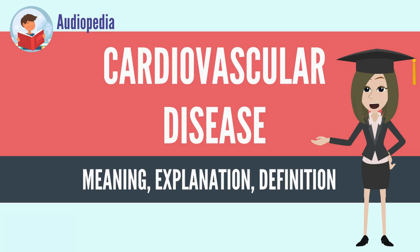85% of people over 80 have CVD. The average age of death from coronary artery disease in the developed world is around 80, while it is around 68 in the developing world. Disease onset is typically 7 to 10 years earlier in men as compared to women.